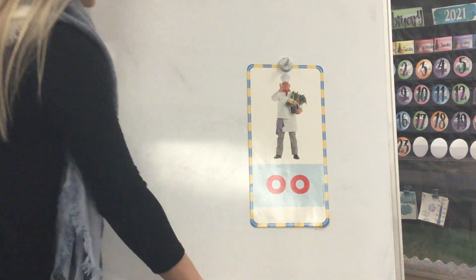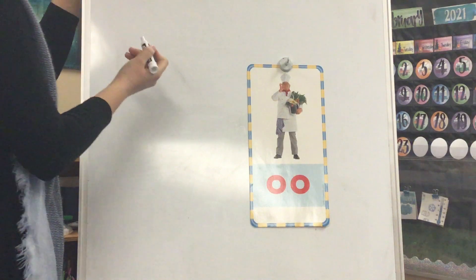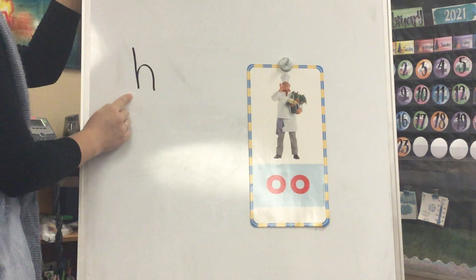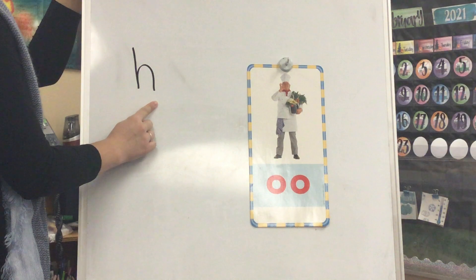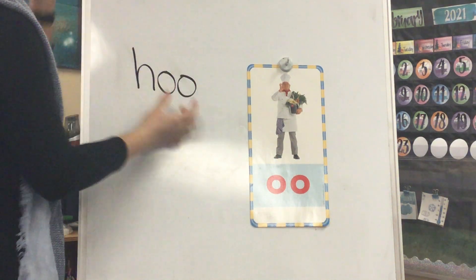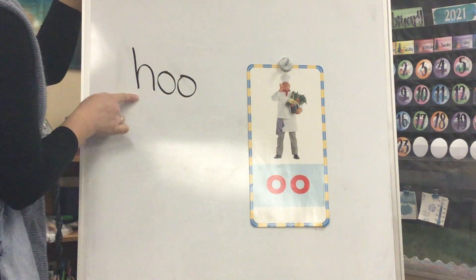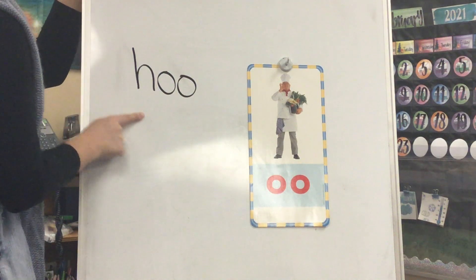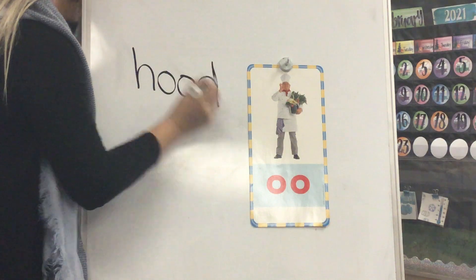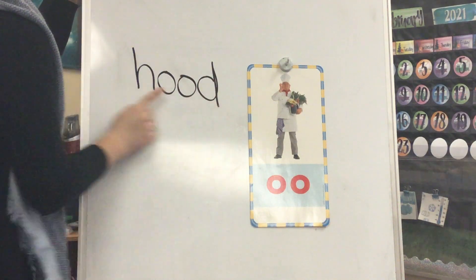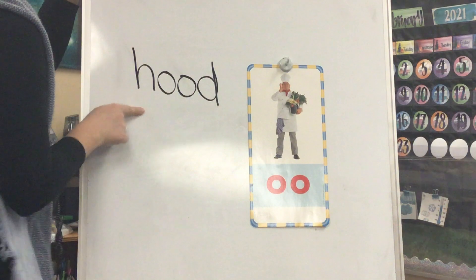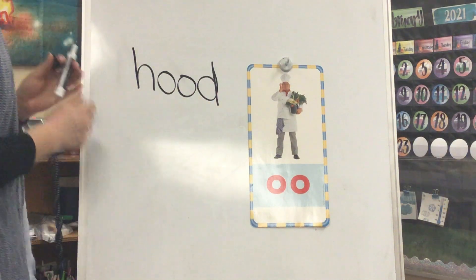Let's look at a word with this sound spelling. Sound: H. Sound: /uh/. Blend: H-/uh/. Sound: D. Blend: H-U-D. Word: hood. Yes, hood.